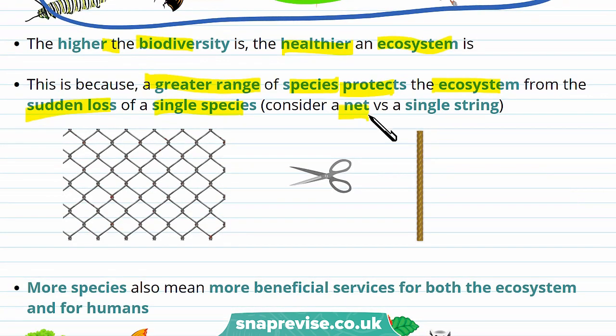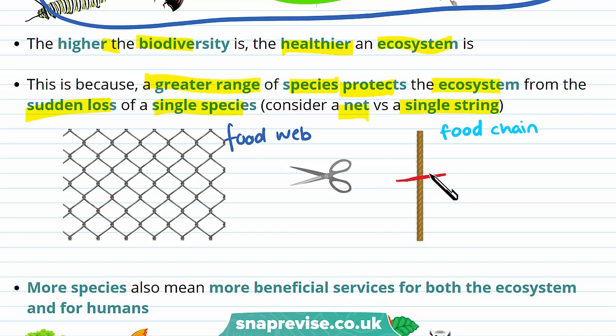Let's consider a net versus a single string as a metaphor. This net represents a food web and this single string represents a food chain. The food web looks a lot more complicated than the food chain. If something is removed from the food chain, the food chain may collapse. However, if something is removed from the food web, it may still be stable as other options are available. More connections in a net mean that cutting a single strand — a single interaction between species — will not affect the whole structure. But if a single string is cut, the whole thing may fall apart.